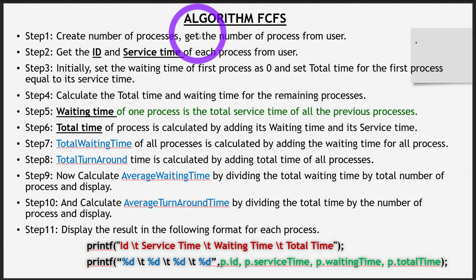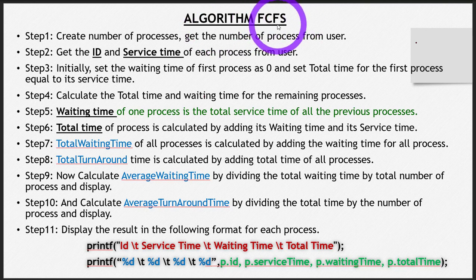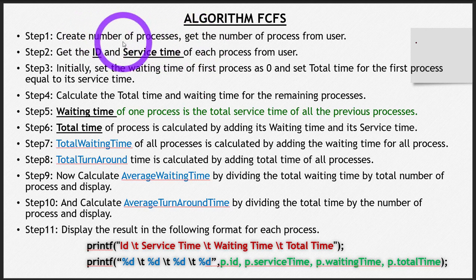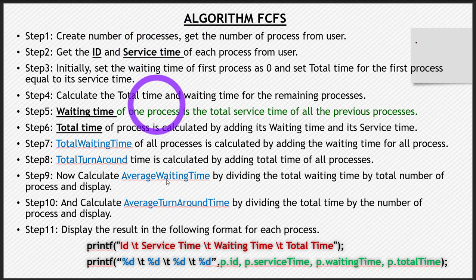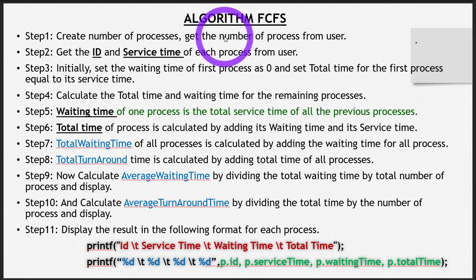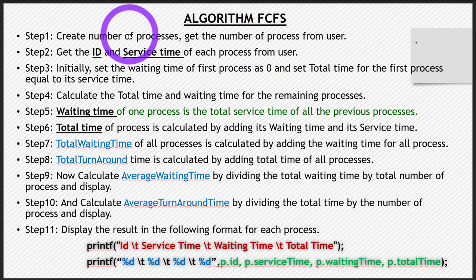Let's discuss the algorithm for FCFS — the detailed steps you have to follow to write code for the simulation of FCFS. The first step is to create an array of structures, as we discussed, and also get the number of processes from the user. You may fix the number of processes at the start, but at the end, do take the number of processes from the user to keep it flexible.